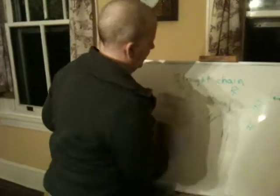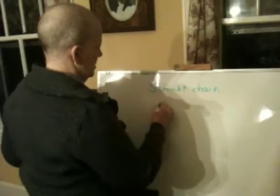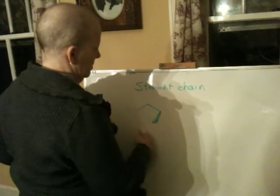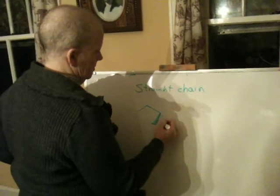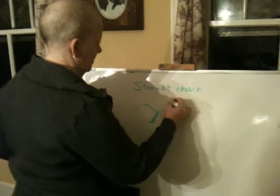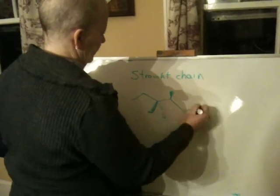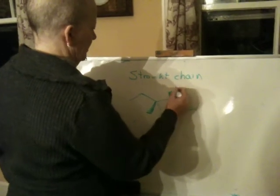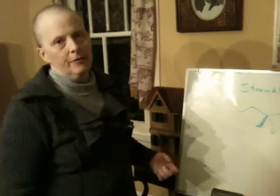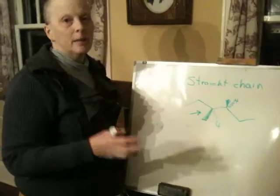So for example, supposing I have something like this. And I wanted to do a conformational analysis of it. I would project down this bond. Now I want to show you a couple of things.